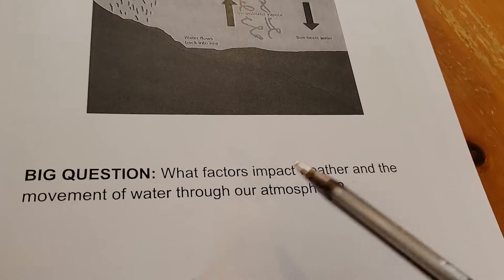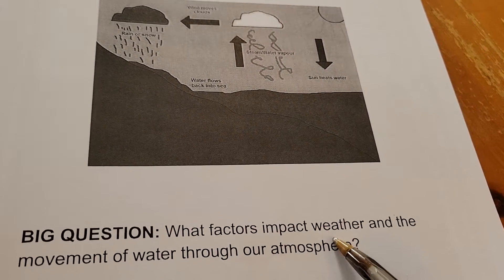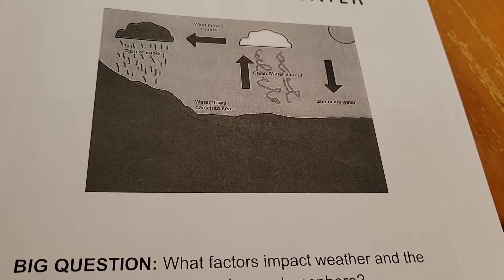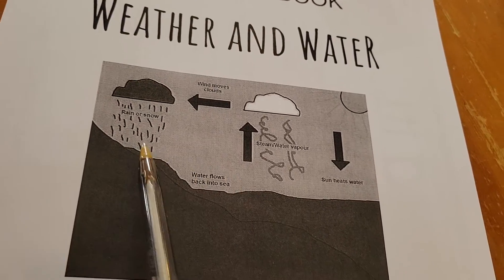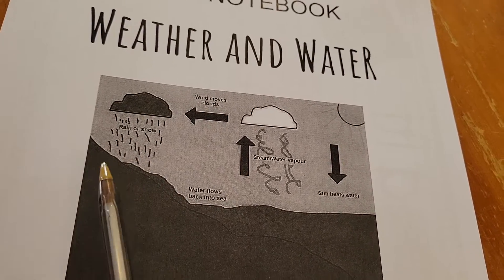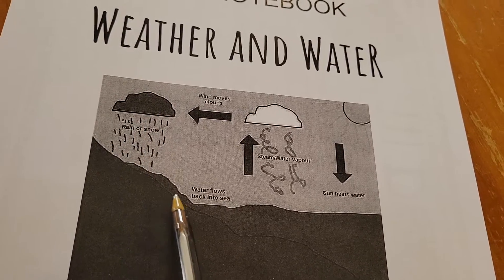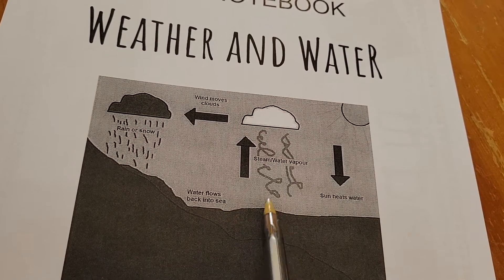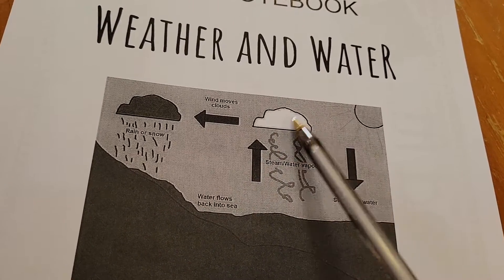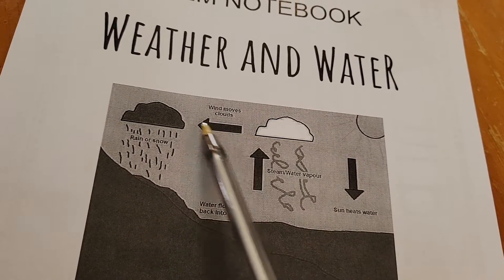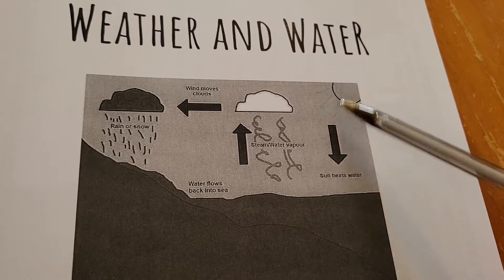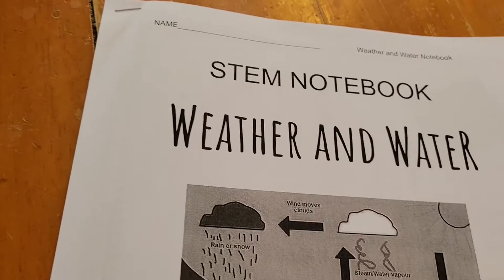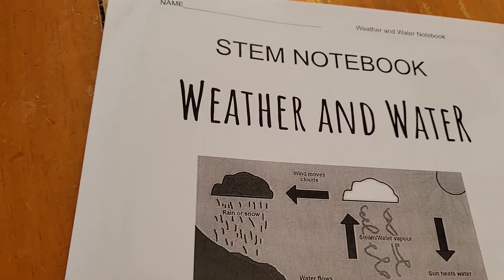What we're going to be hoping to answer is: what factors impact weather and the movement of water through our atmosphere? You can see the picture — probably something you're a little bit familiar with. The idea of rain and snow, water flowing down to the sea, evaporating, creating clouds, moving the clouds, sun heating the water. Some different things like that that might look familiar that we'll be talking about.